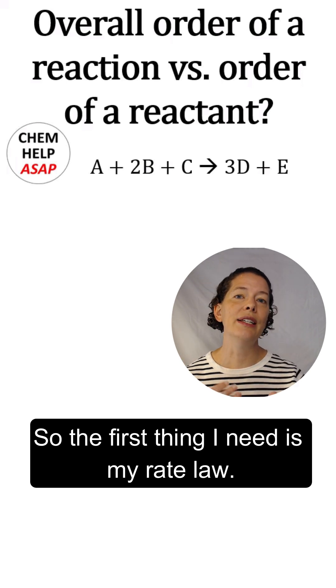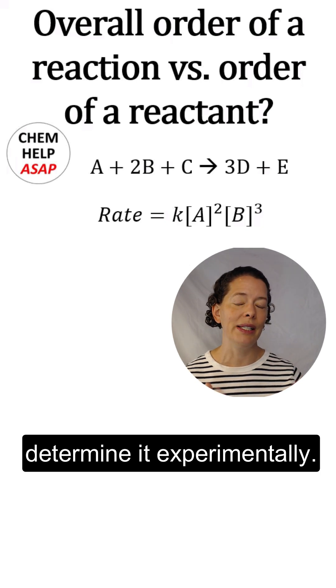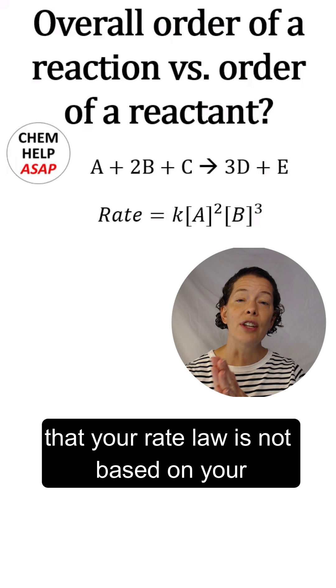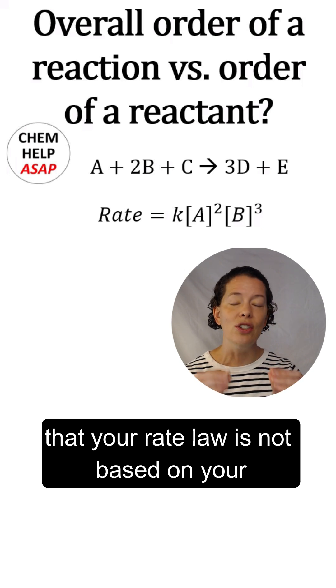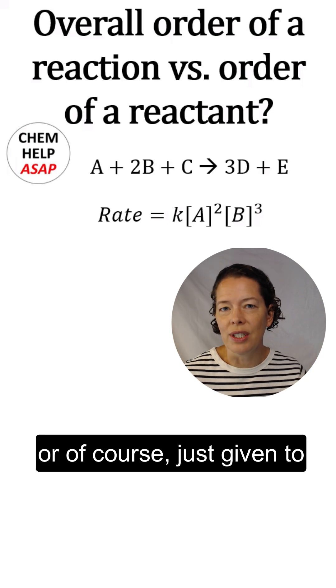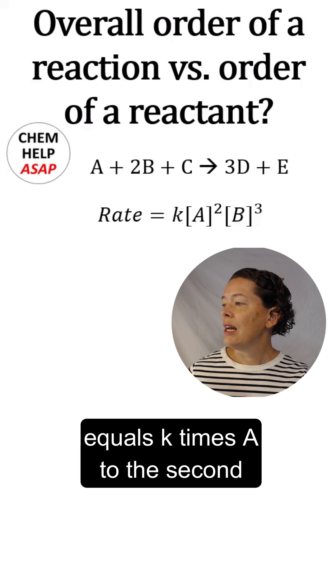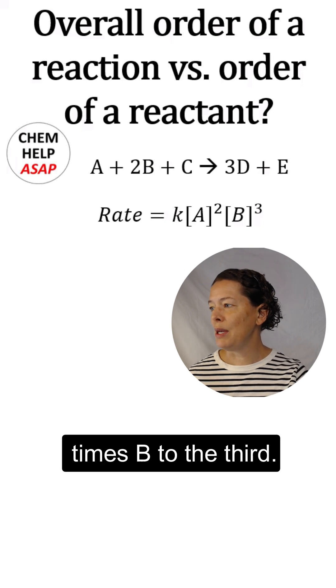So the first thing I need is my rate law. Now this might be given to you, or you might determine it experimentally. However, I do want to point out that your rate law is not based on your stoichiometric coefficients. So it does need to be determined experimentally or just given to you in a problem. So our rate law for this reaction is rate equals K times A to the second times B to the third.